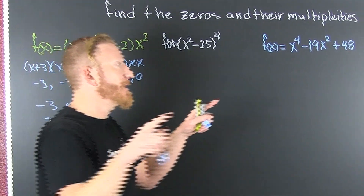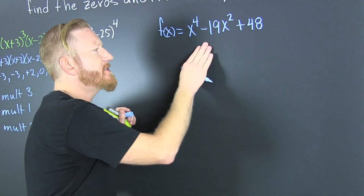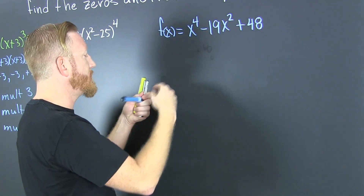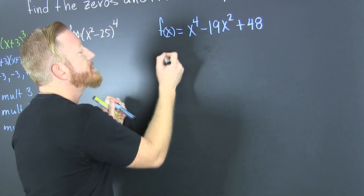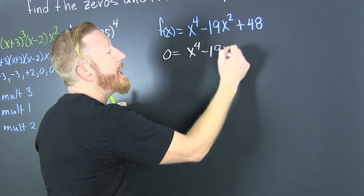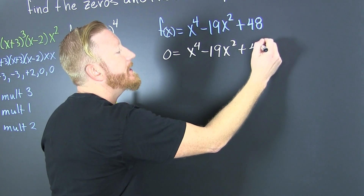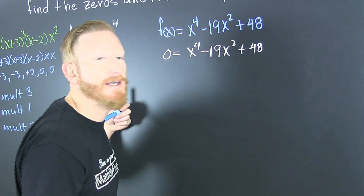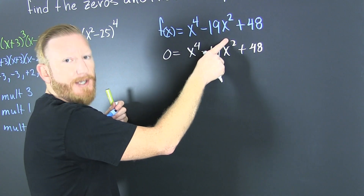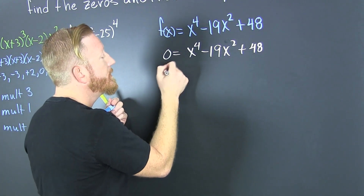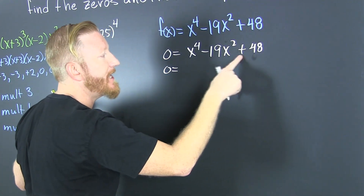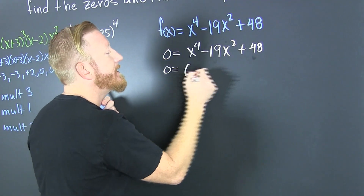Now let's do this next one. What if they give it to you in the wild? We need to find the zeros, so we set it equal to zero: 0 = x⁴ - 19x² + 48. This is a quadratic in form — as long as the exponent is twice the other, we can factor as if it were quadratic. Factors of 48 that add to 19 — we need that.